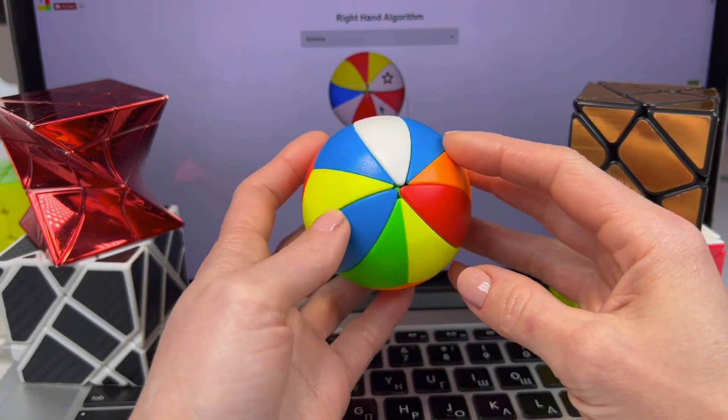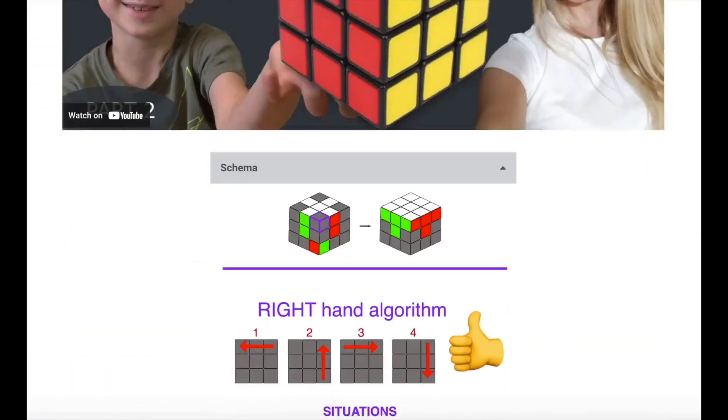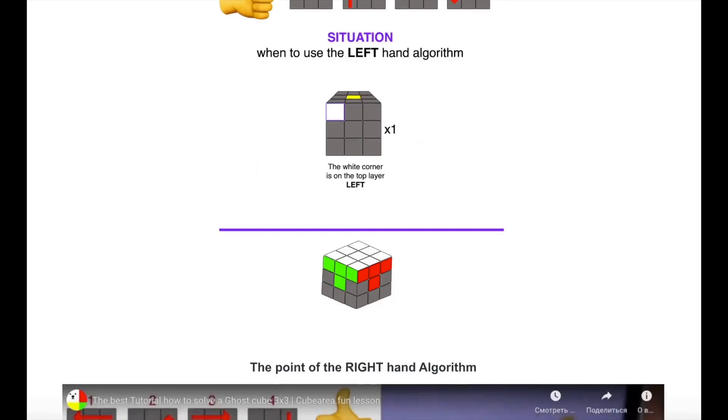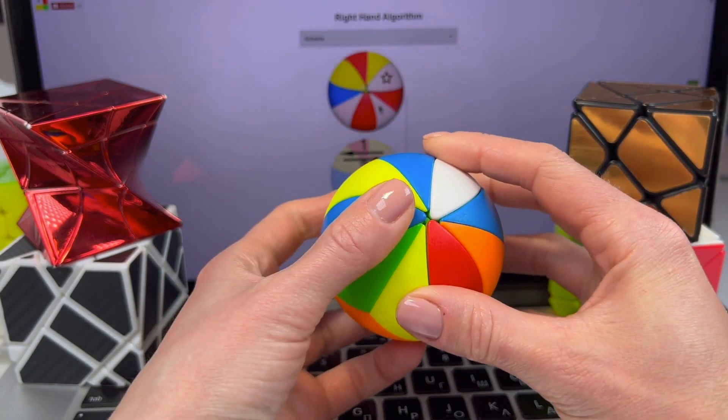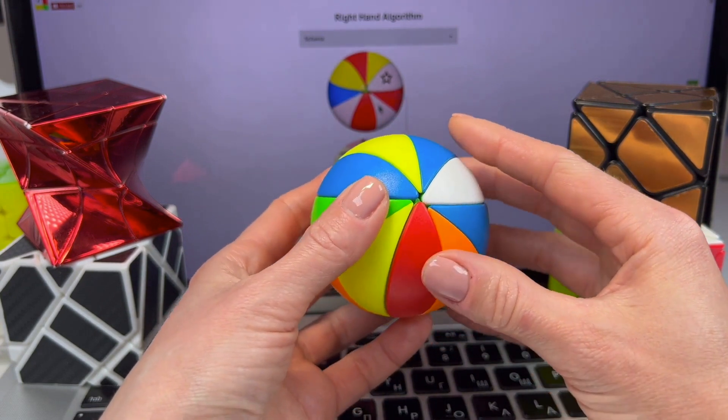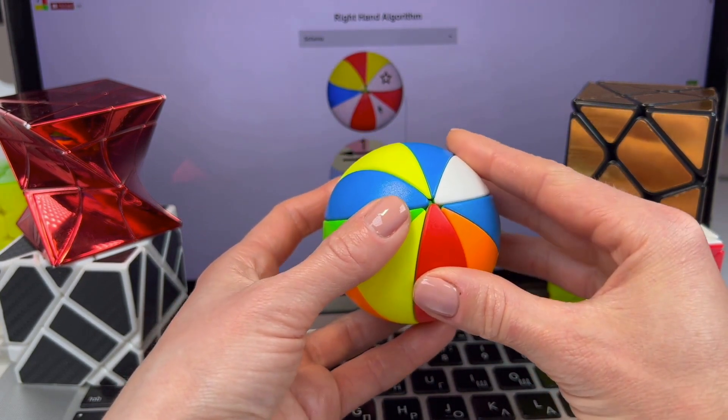If you've already watched some of our lessons, then you're already familiar with the right-hand algorithm and the left-hand algorithm. This means you won't have to learn anything new. You already know everything. And you'll just apply your knowledge when assembling this puzzle.